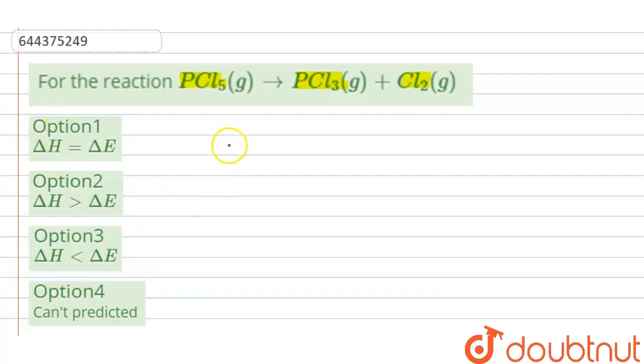The relation between delta H and delta E can be given as delta H equals delta E plus delta NG RT.